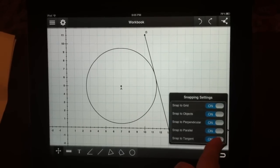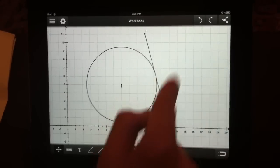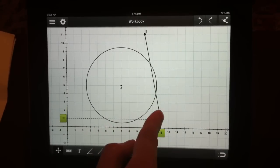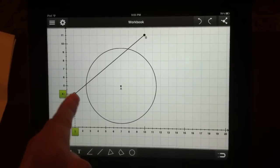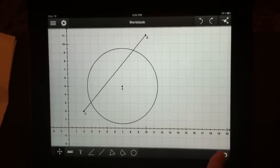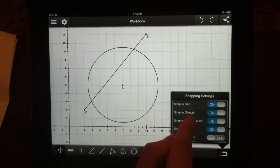For example, you can turn off snapping to tangent. Now if I move the line, it doesn't snap to tangent automatically. In the same way you can turn off snapping to parallel and to perpendicular.